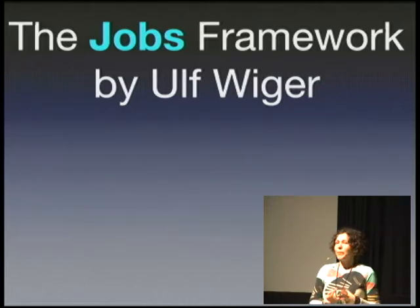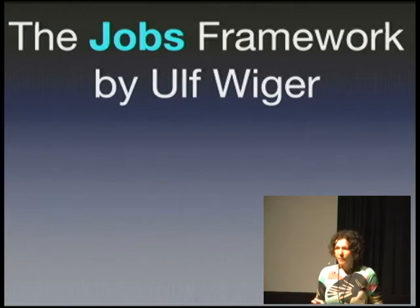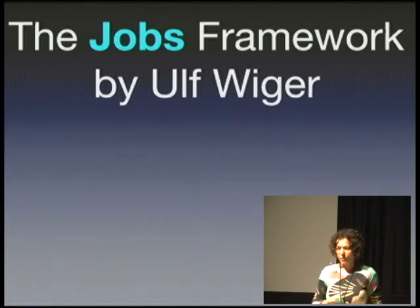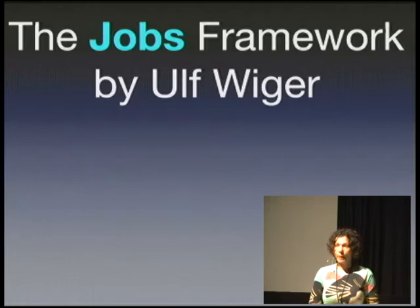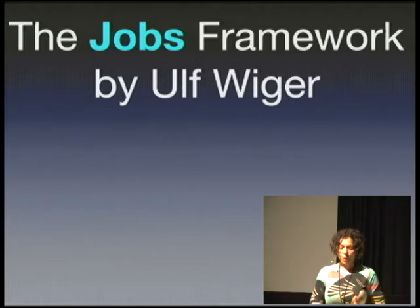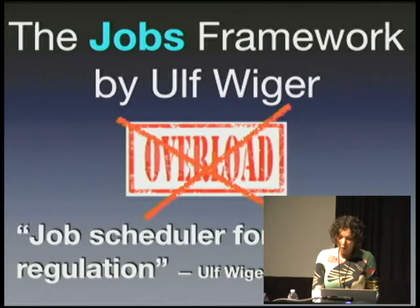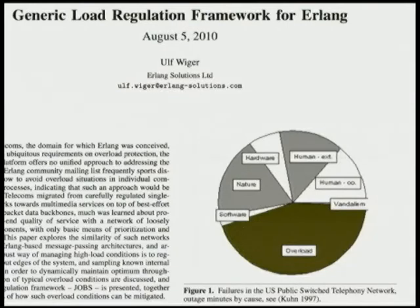The library we chose is the Jobs framework by Ulf Wieger. The rest of the presentation I'll be talking about this framework — not as a tutorial, but as a really great example. For Ulf, it's a jobs scheduler for load regulation, and to make it even simpler, its sole purpose in life is to prevent overload. According to an article by Ulf written in 2010 — which pretty much describes the inspiration behind the Jobs framework — overload is the leading cause of system downtime.